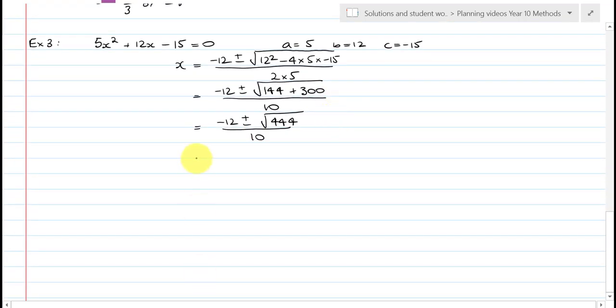Now just reach back in time a little bit to your work with surds. Negative 12, plus or minus the square root of 444, is 2 times the square root of 111. Because I can take a factor of 4 out, and the square root of 4 is 2, over 10. 111 is not prime, because there's a factor of 3, but it has no square factors. And I can check it really quickly.